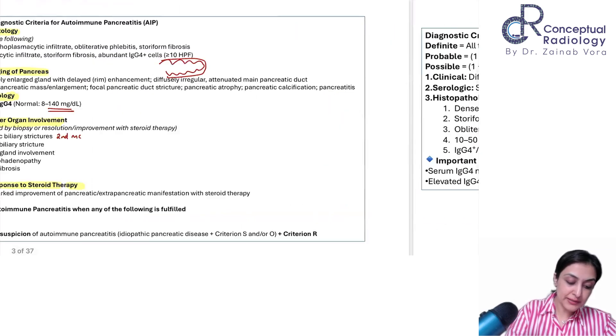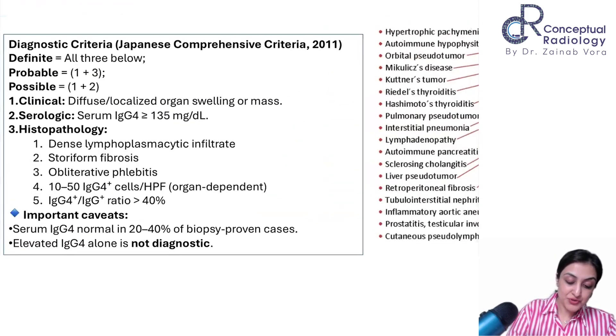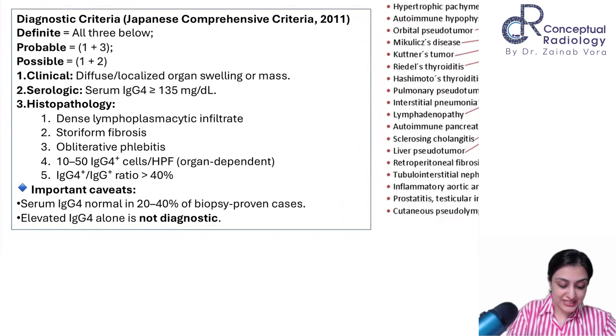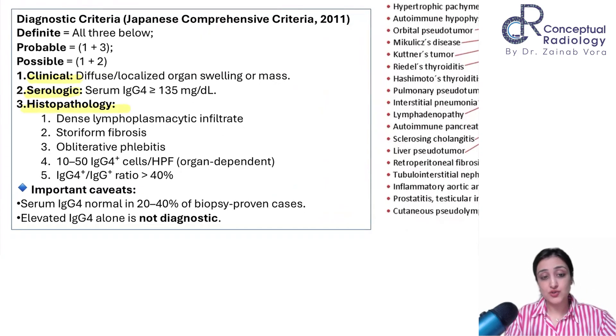This was the Mayo Clinic criteria. There is also a Japanese comprehensive criteria, which is more or less similar — covering clinical, serological, and pathological parameters.